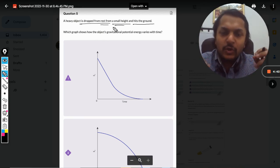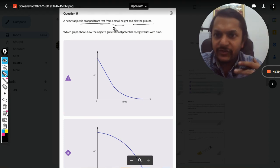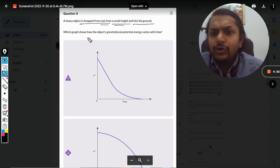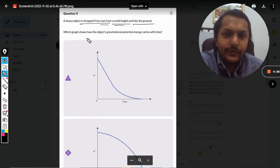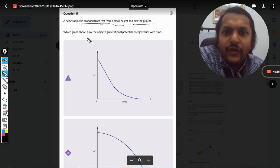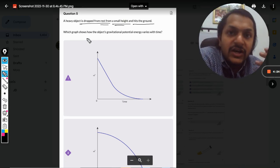Because the question wants to tell you that gravity is constant, it's not a variable. Because with height, even the gravity varies. Which graph shows how the object's gravitational potential energy varies with time? So we need to find the expression for gravitational potential energy with respect to time.